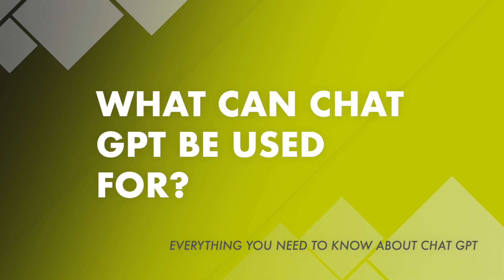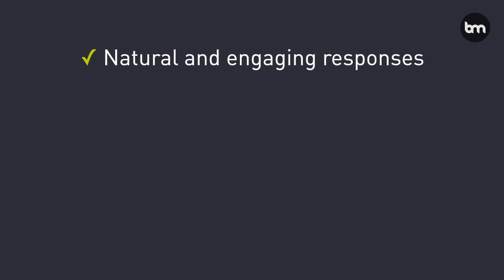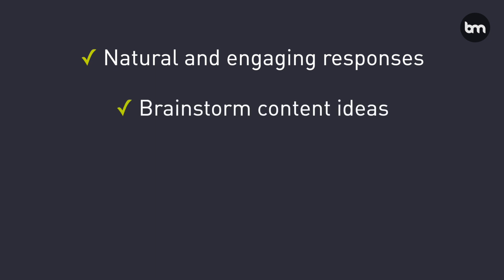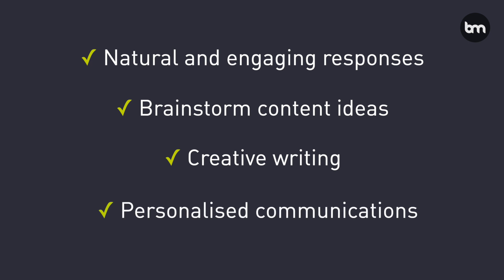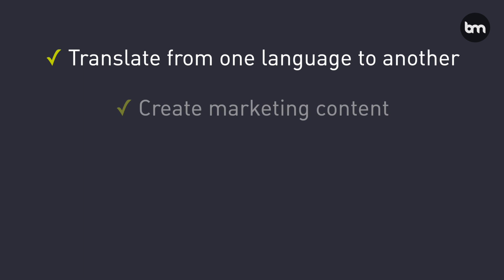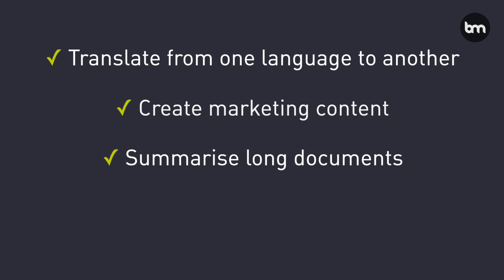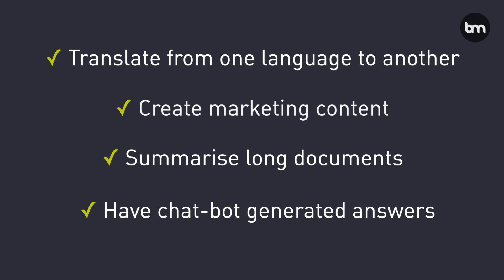So what can ChatGPT be used for? It can answer questions on pretty much anything, generate natural and engaging responses in a chatbot or virtual environment, brainstorm content ideas on keywords or topics, do creative writing such as poetry or stories, create personalized communication like email responses or product recommendations, translate text from one language to another, create marketing content like blog posts or social media updates, recap long documents by generating a shorter summary, power chatbot answers in customer service tools, and even generate snippets of computer code to help with programming.